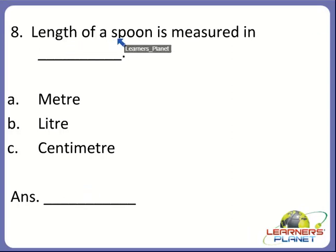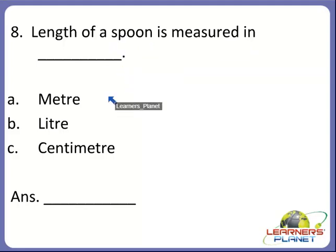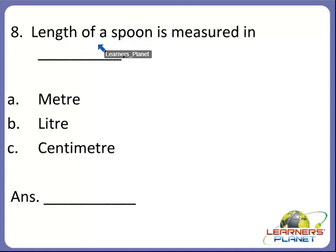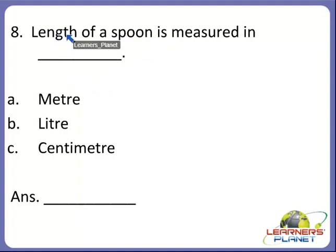Now the next one. Length of a spoon is measured in dash. In what is it measured? Is it meter, liter, or centimeter? Remember — it is the length of a spoon, not the amount of liquid in the spoon. So the length of a spoon is measured in centimeter. So C is the correct answer.